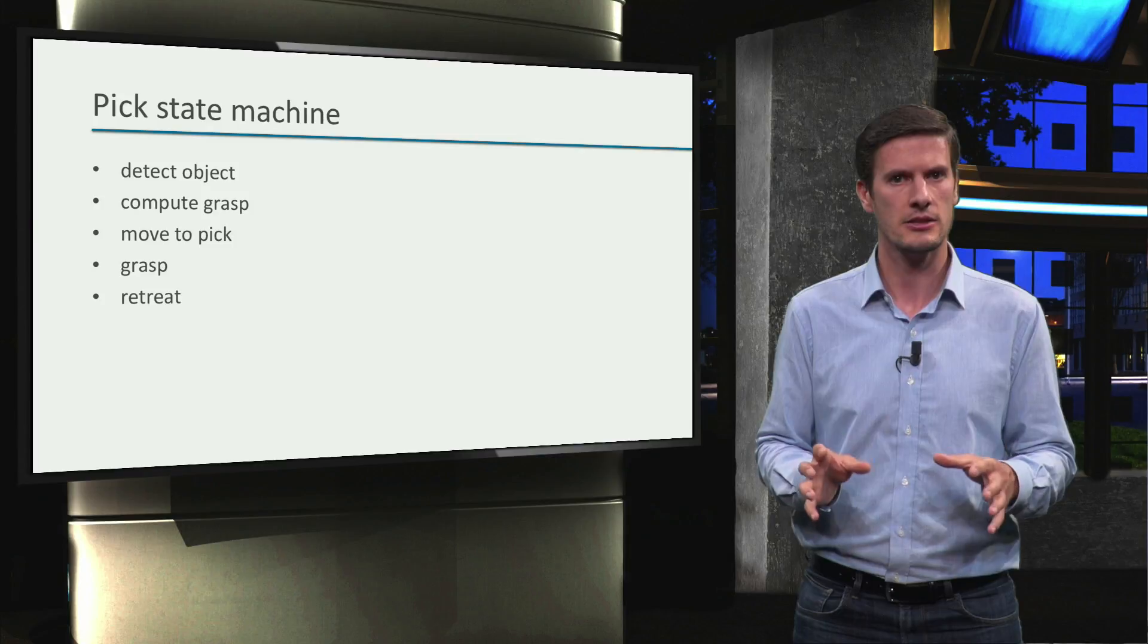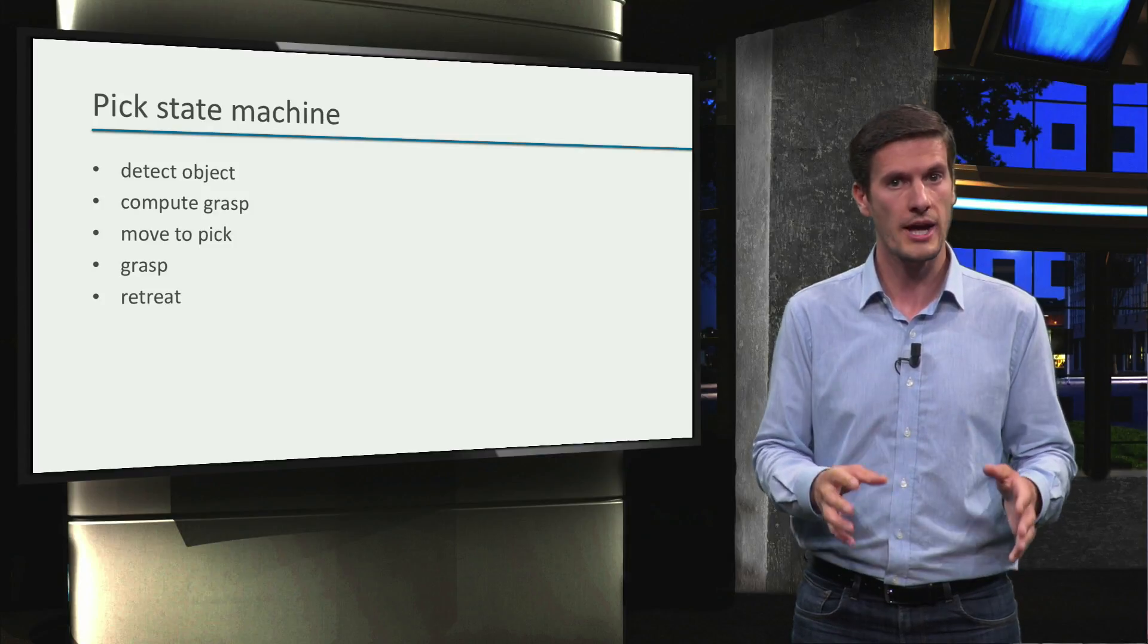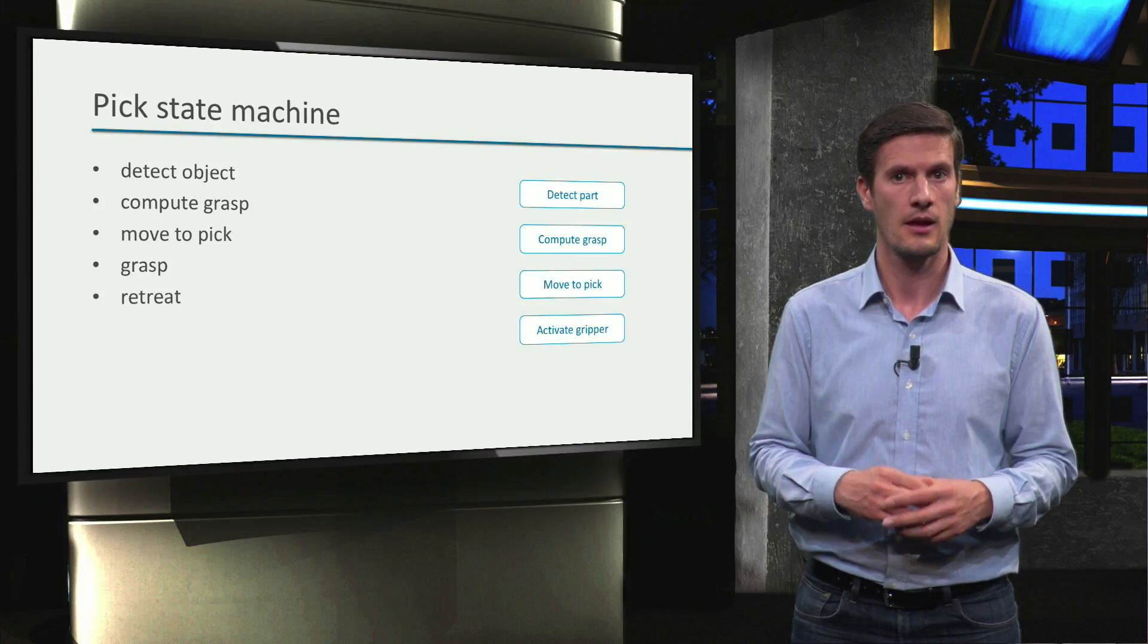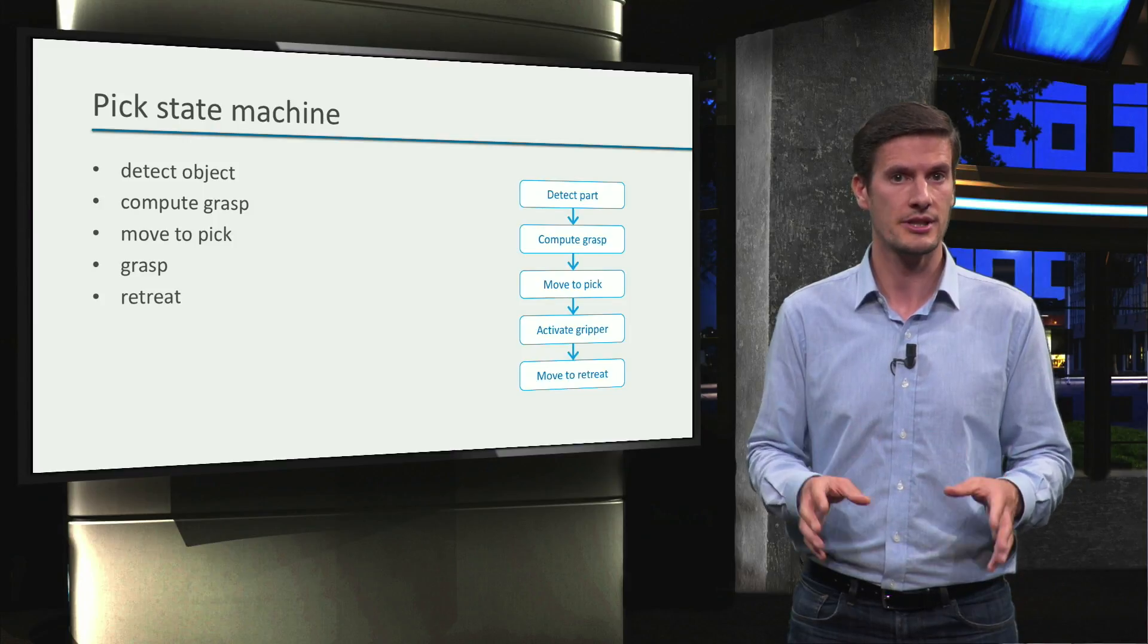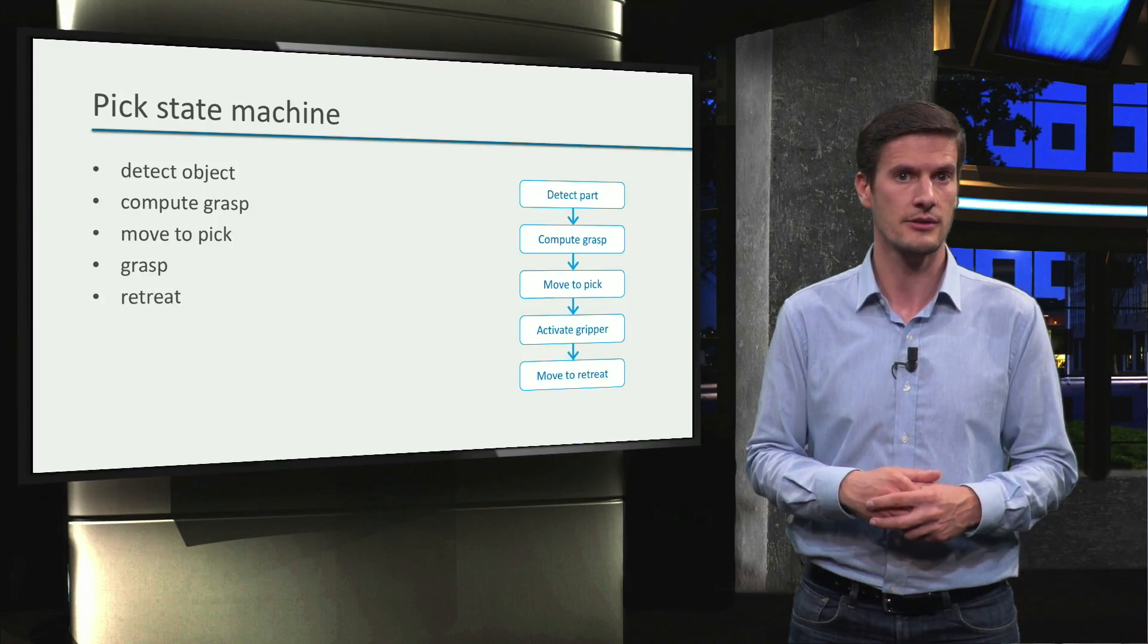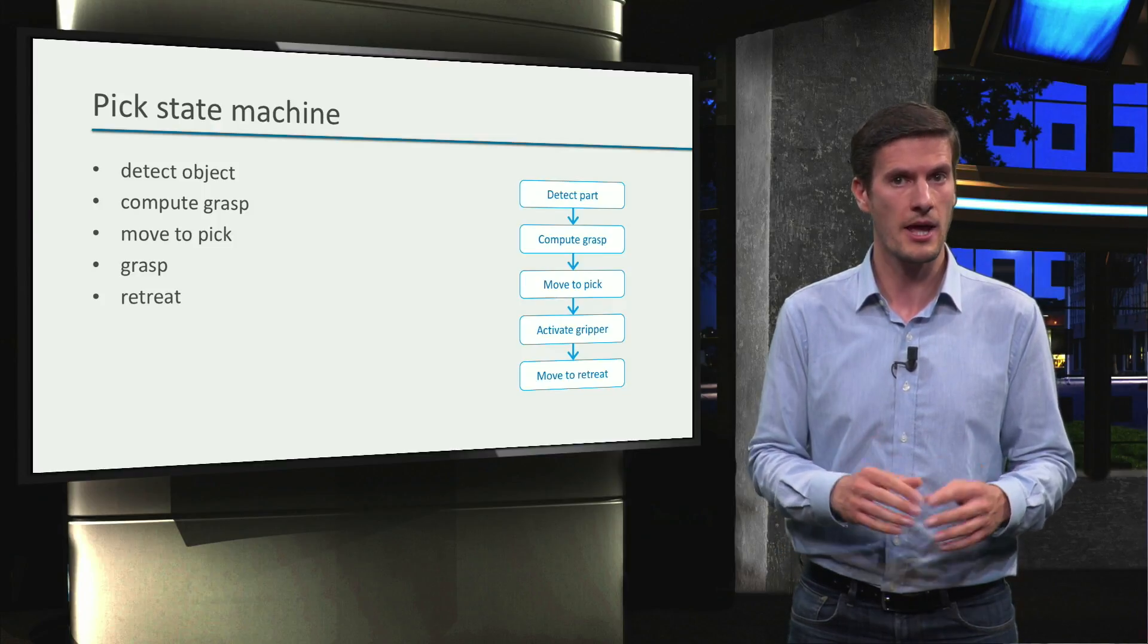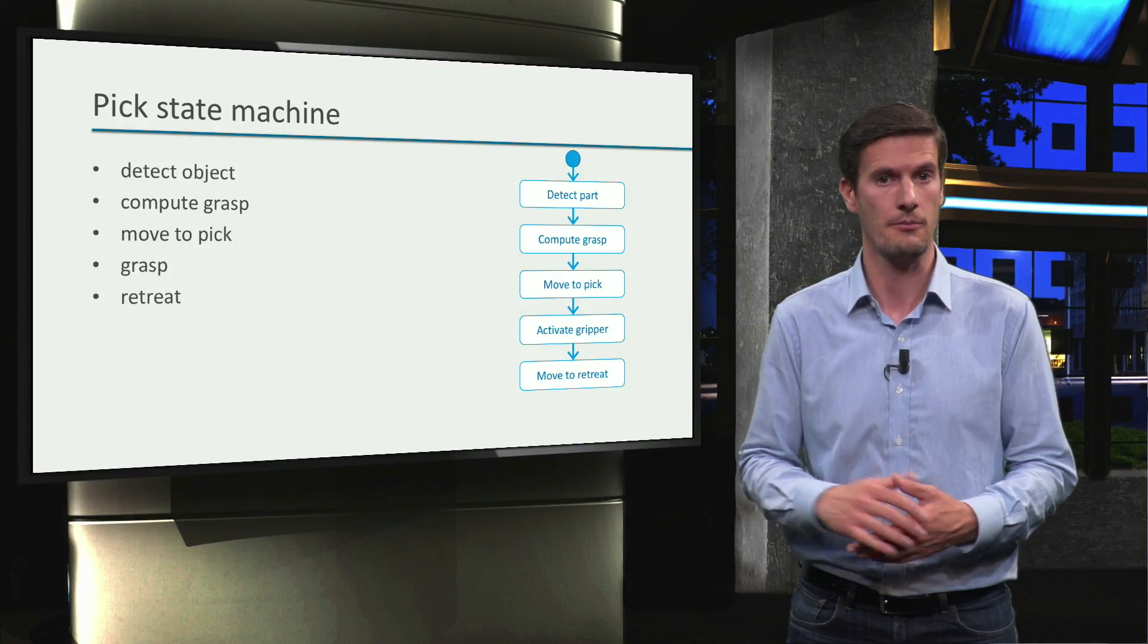Let's see how the state machines for our picking example looks like. These were the atomic actions we have defined for our application. So we add a state for each of them. And then we connect the states following the desired sequence of execution. Now, to complete the flow of execution for our behavior, we add the transition to the first state and to the behavior endpoint.